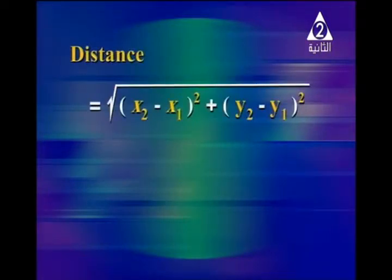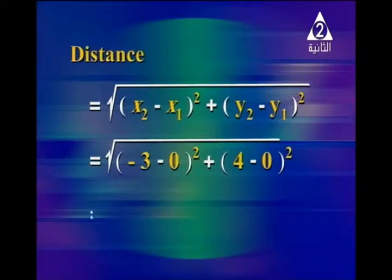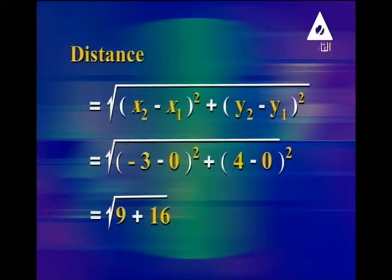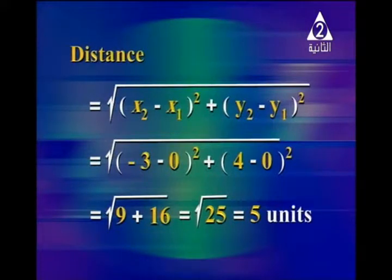At the very beginning, you are going to notice that we can find the distance by the following rule: distance equals square root of (x2 minus x1) squared plus (y2 minus y1) squared. So it equals square root of (negative 3 minus 0) squared plus (4 minus 0) squared, which gives square root of 9 plus 16, equals square root of 25, and the distance is 5 units.